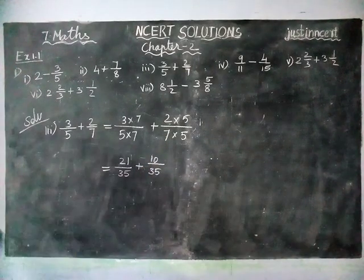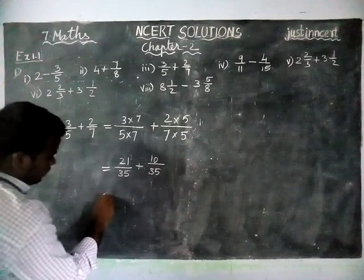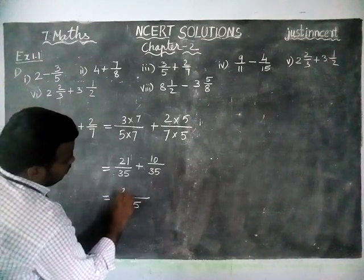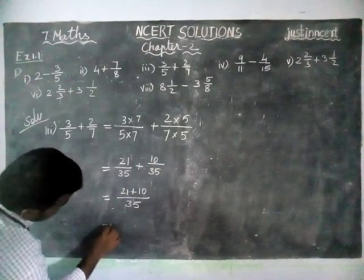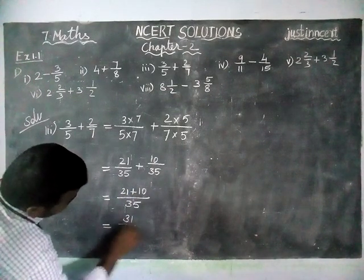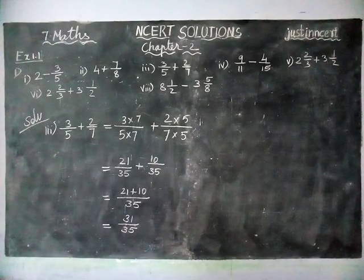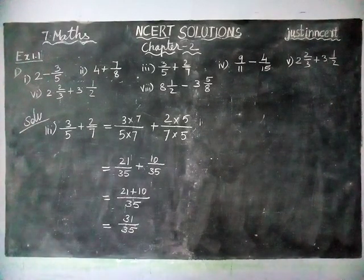Now denominators are same. Common denominator is equal to 31 divided by 35. And this is proper fraction, so we cannot convert into mixed fraction.